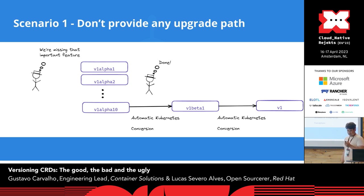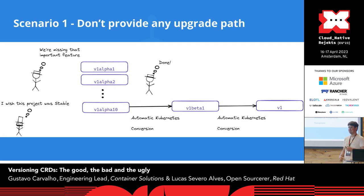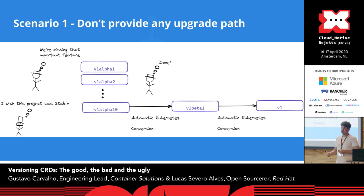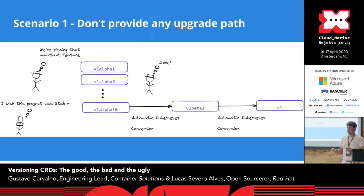That's very nice until your frustrated user realizes the project is not stable at all. They say: cool, very cool, nice features — I just wanted something that didn't break my production setup. I would just go use that other project because it's easier to manage and deploy. This is the problem when you don't provide an upgrade path, meaning documentation only.